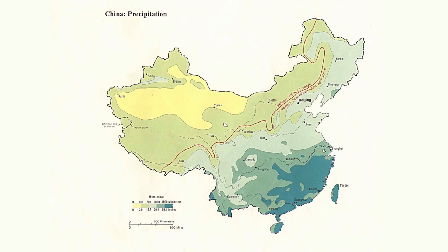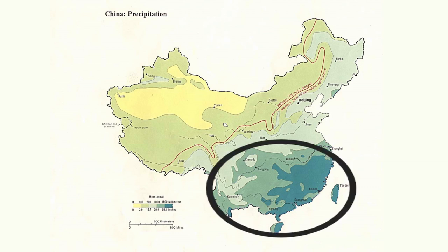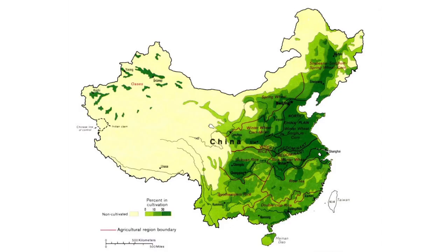The distribution of rainfall in China not only marks the differences between East and West, between the native Han Chinese people who dominate southeastern China and their agrarian economy, but also defines the basic issues between North and South. Let's return to our rainfall map, which shows that the bulk of the rainfall is in the south, and this is in contrast to the agricultural map, which shows that most agricultural cultivation is in the north.